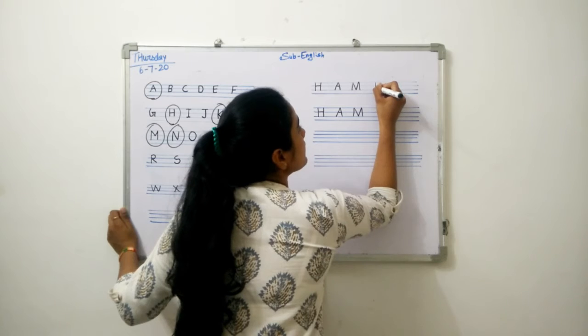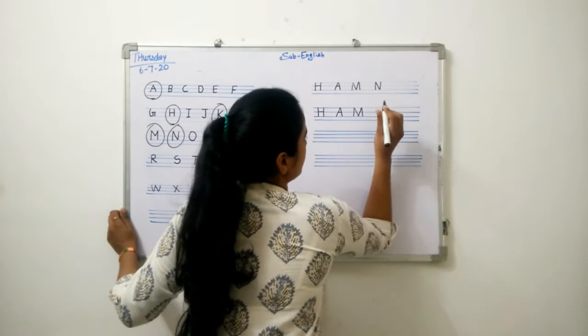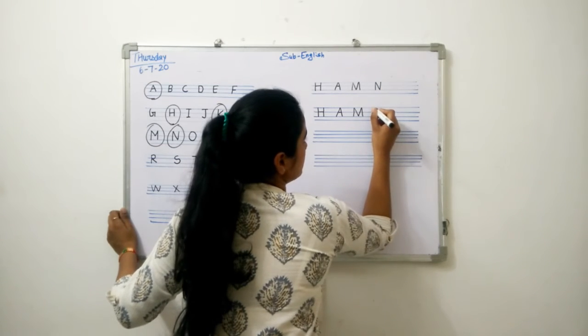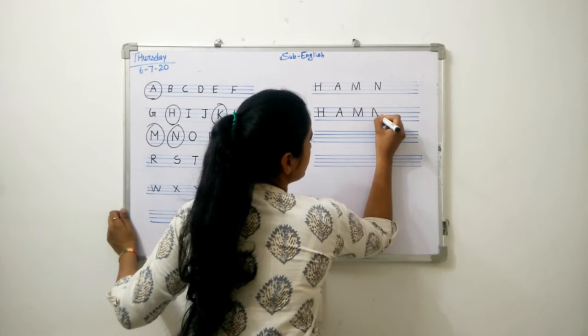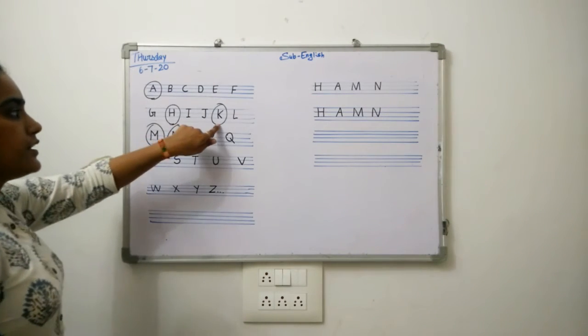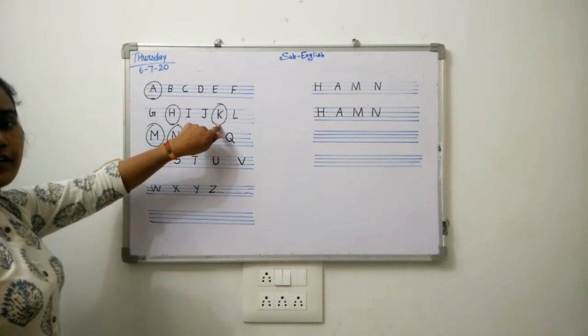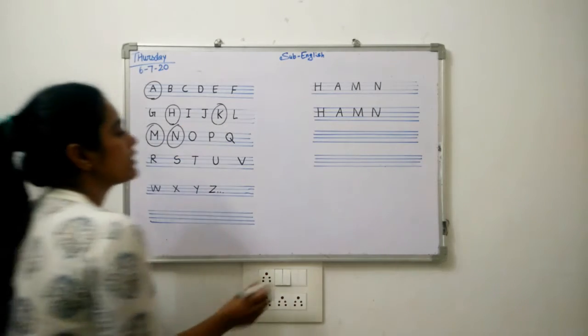Next letter is N: standing line, slanting line, standing line. Standing line, slanting line, standing line.